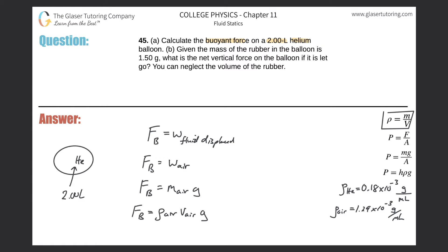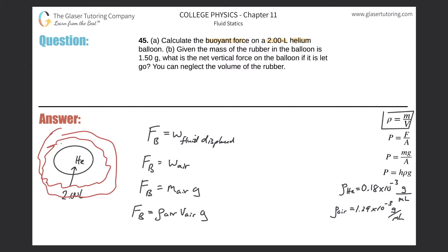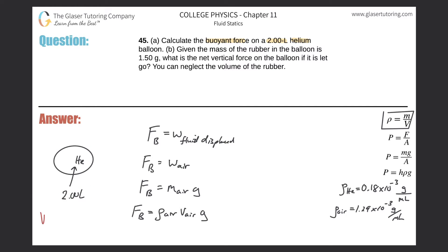The density of air you look up from a table. The volume of air displaced equals the volume of the balloon — because the balloon is completely submerged in ambient air, so the volume of air displaced is exactly equal to the volume of the balloon. Now all we have to do is plug in the values.